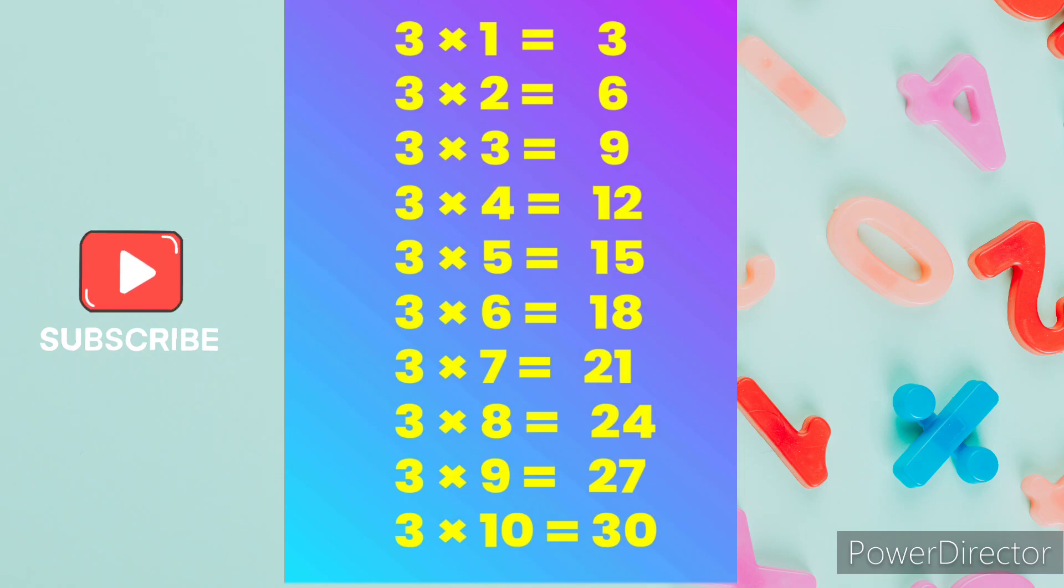3 6s are 18, 3 7s are 21, 3 8s are 24, 3 9s are 27, 3 10s are 30.